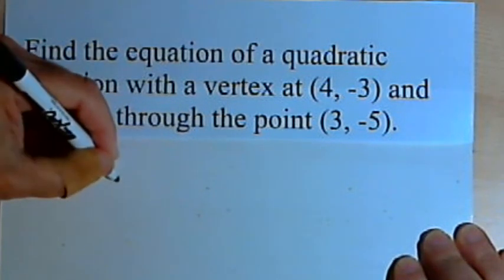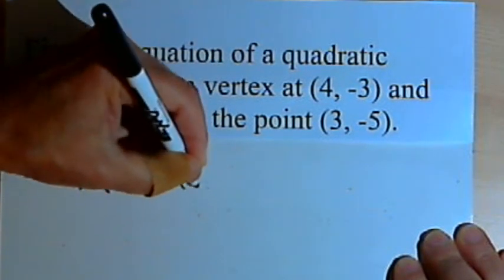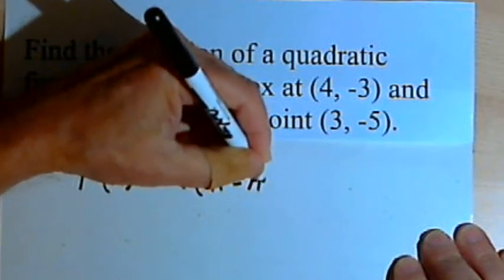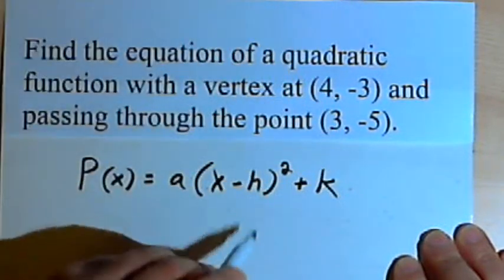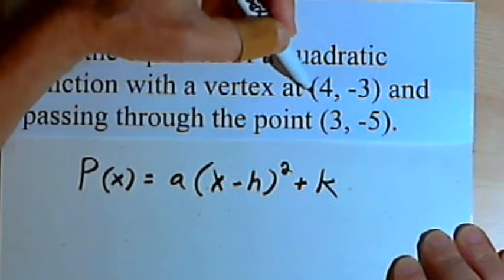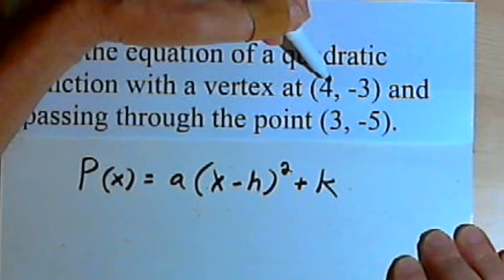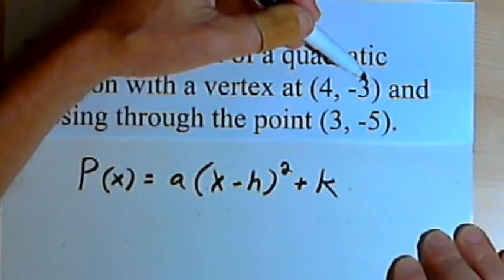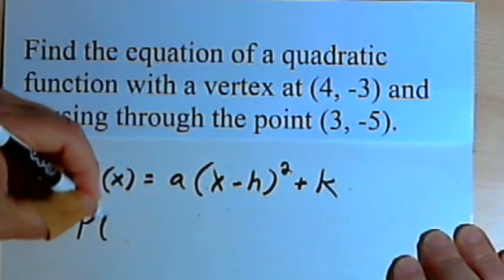The vertex form says that p of x equals a times x minus h squared plus k. Now h is going to be the same as the x-coordinate at your vertex, and k is going to be the same as the y-coordinate at the vertex. So we can fill in those values, those numbers.